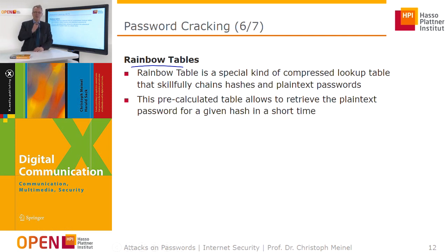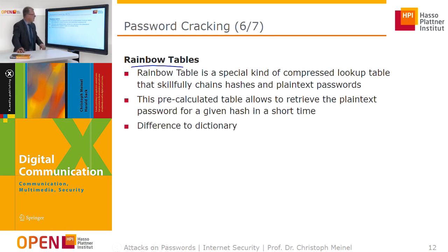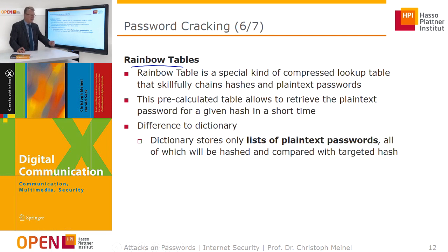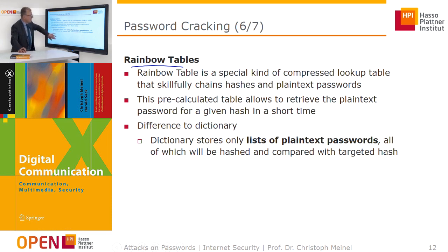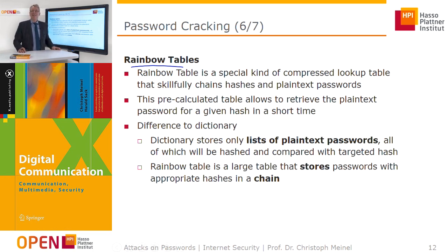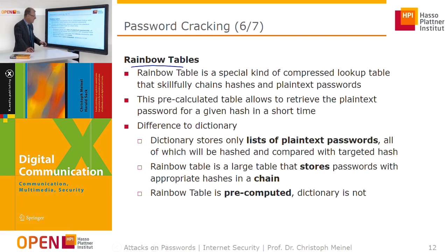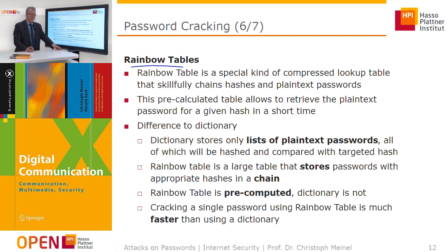Rainbow tables are a special kind of compressed lookup table that make it more efficient to find plain text passwords. The idea is to form skillfully crafted chains of hashes, so it is not necessary to compute a hash for each word when searching. These tables are pre-calculated before the cracking attack and allow retrieval of the plain text password for a given hash in a short time. Unlike a dictionary that stores only plain text passwords to be hashed and compared, a rainbow table stores passwords with their hashes in a chain, making cracking a single password much faster than using a dictionary.